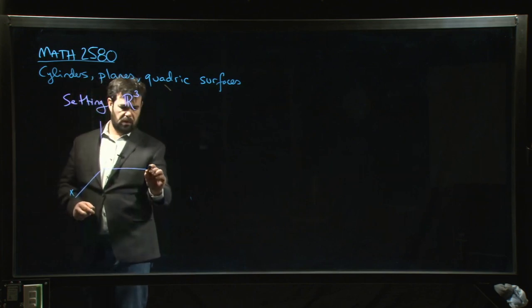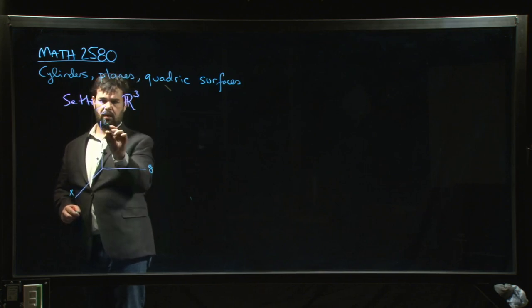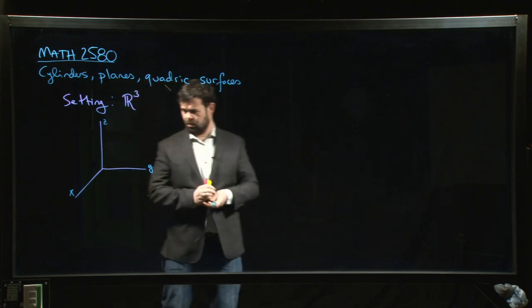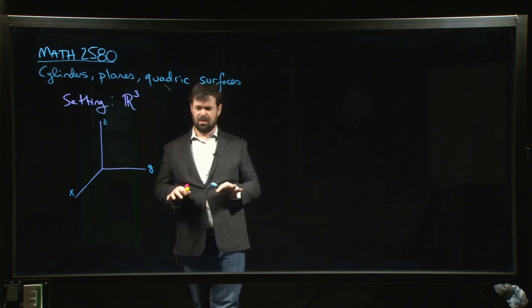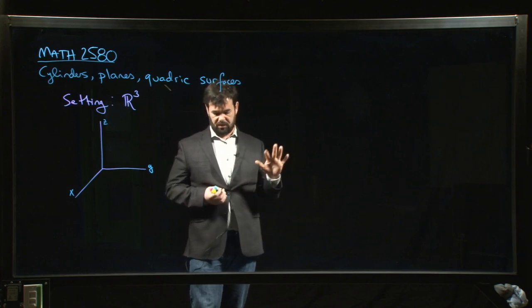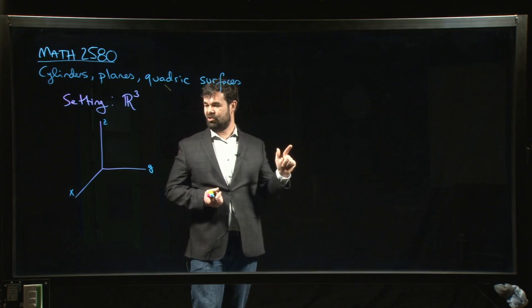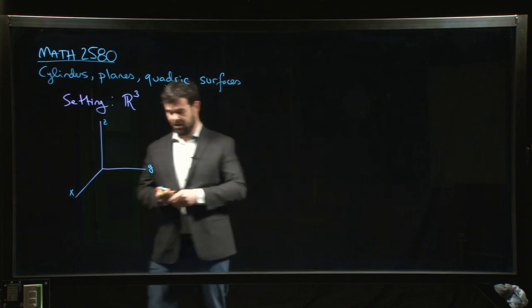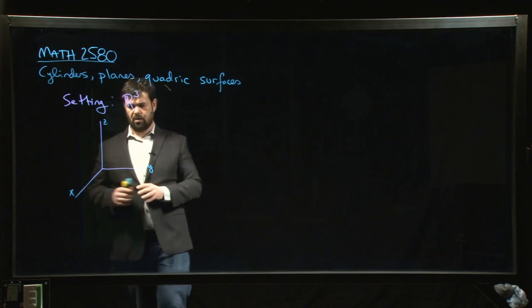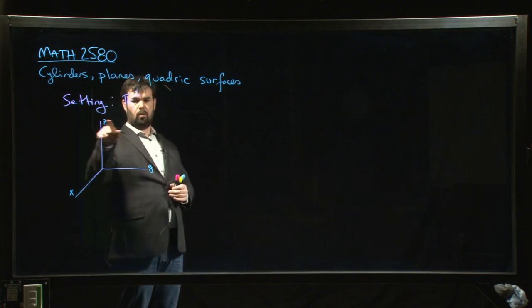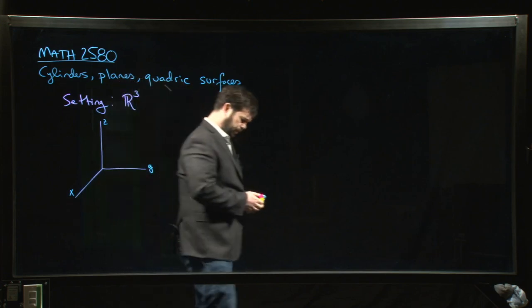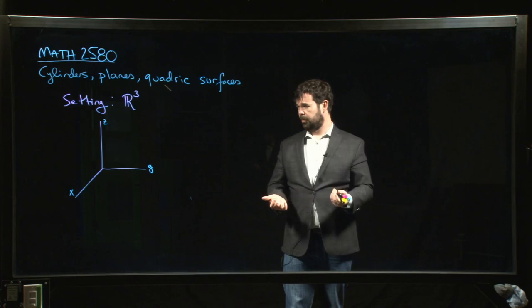We have the usual convention for labeling the axes with a right-hand rule setup — X, Y, Z going around like that. One thing to note is that these videos are mirrored, so my attempts at showing you the right-hand rule may fail. Sometimes you'll see X and Y like this and Z coming out of the board. There are different ways of representing it, but this is probably the most common setup.